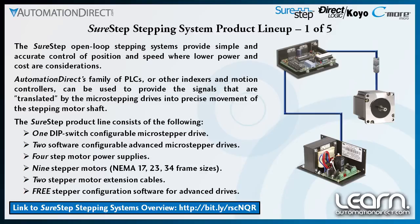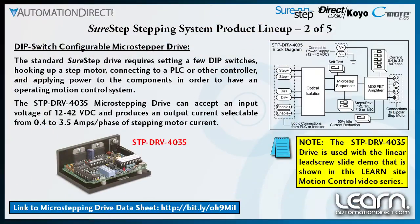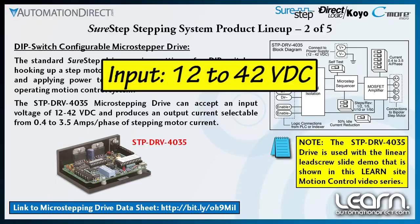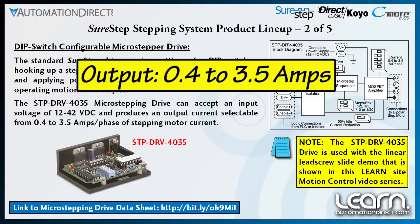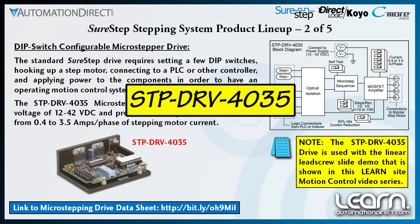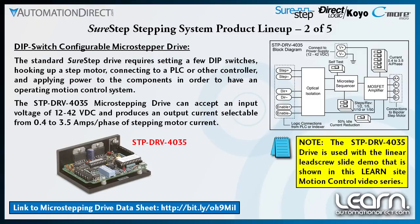The signals translated by the micro stepping drives into precise movement of the stepper motor shaft can be provided by AutomationDirect's Do-more family of PLCs or other indexers and motion controllers. The dip switch configurable micro stepper drive can accept an input voltage of 12 to 42 volts DC and can produce a selectable current from 0.4 to 3.5 amps, which is the stepper motor's current rating per phase. I'll be using part number STP-DRV-4035 as part of my motion control demonstration, and will cover it in more detail in the part 4 video titled 'Wiring, C-TRIO Jumper Settings and Drive Dip Switch Settings.' With a few dip switch settings, wiring up a step motor, connecting to a controller, and applying power, we can have an operating stepping system in short order.